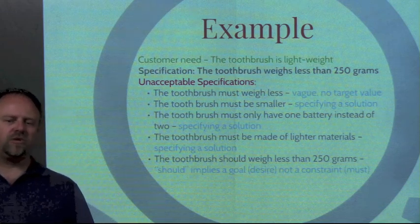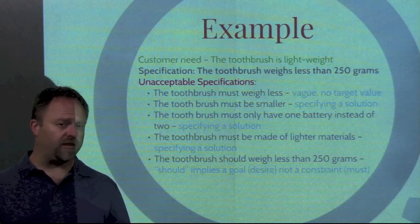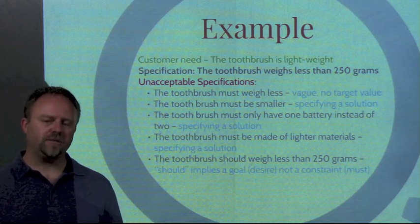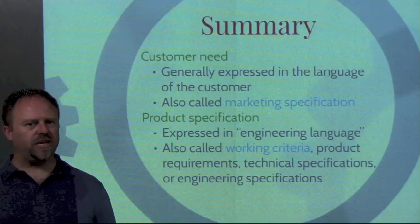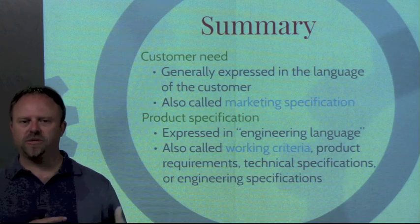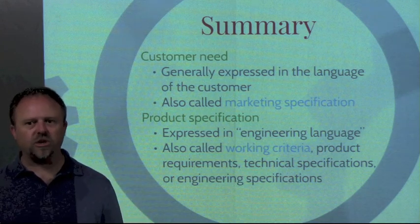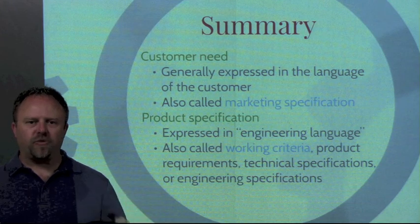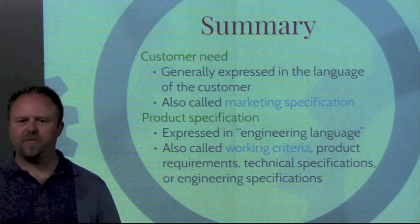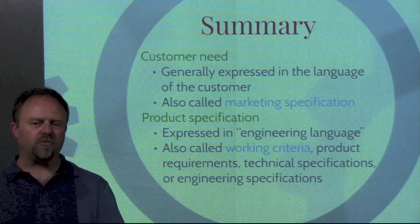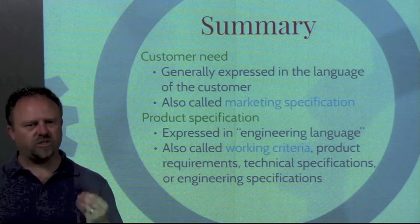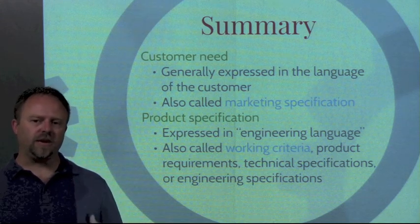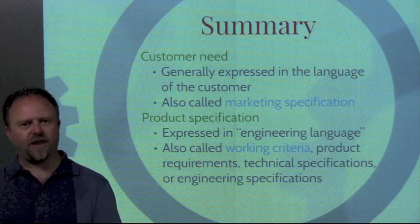Also, the toothbrush should weigh less than 250 grams — the word 'should' implies it might be a goal rather than a constraint, so we want to leave 'should' out and just say the toothbrush weighs less than 250 grams. Our customer needs statements are what we use to write our specs; those are written in more layman's terms, which we'll call marketing specs. The product specifications — also called design specifications or working criteria — are written in engineering language, something we can check to see if our design meets those criteria. That's how we define our design specifications.